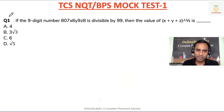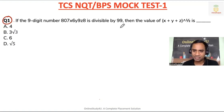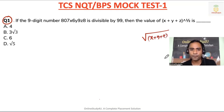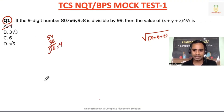Let us start with question number one. Before that, you first try to solve the question by yourself. If the nine-digit number is divisible by 99, then find the value of x+y+z square root. So when 8+7=15, 15+6=21, 21+9=30, 30+8=38, and 54 minus 38 is 16, the square root of 16 is 4.